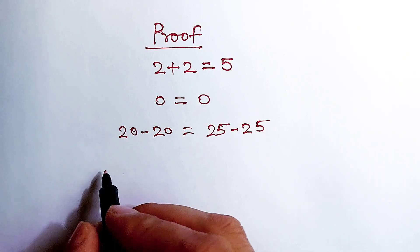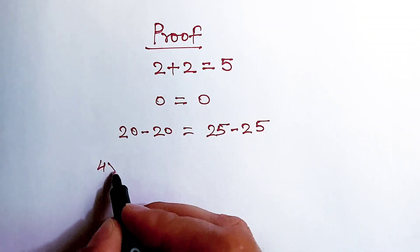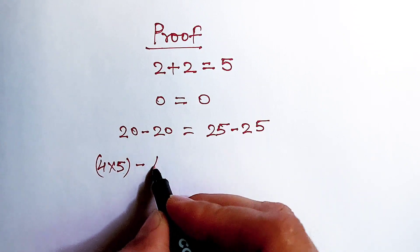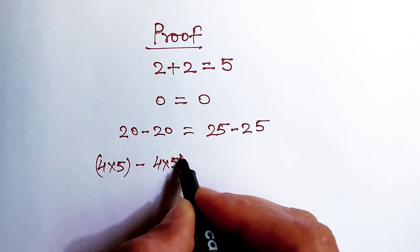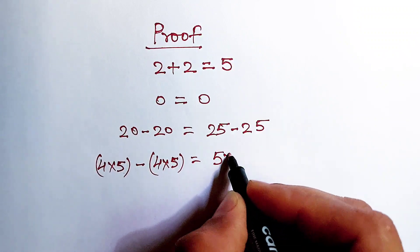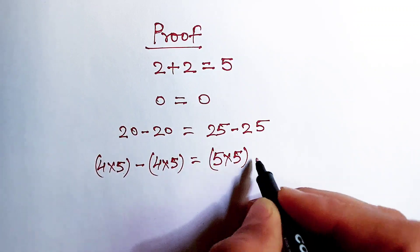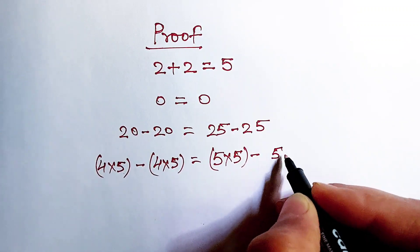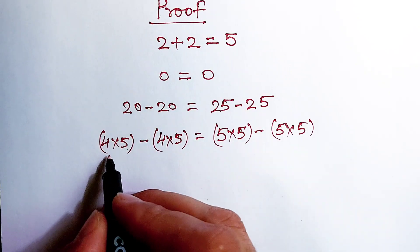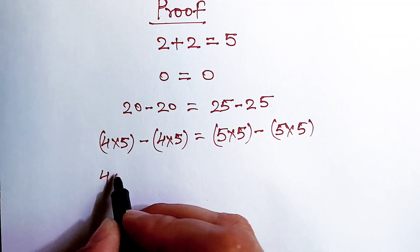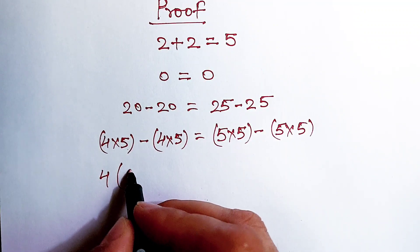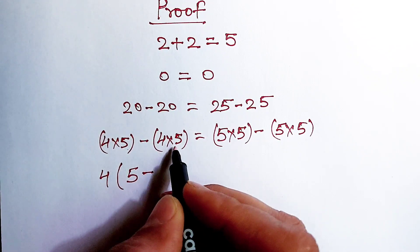Now this 20 can be written as 4 multiply 5 minus 4 multiply 5, equal to this 25 can be written as 5 multiply 5 minus 5 multiply 5. Here we will take out 4 as a common term.